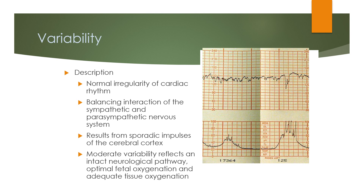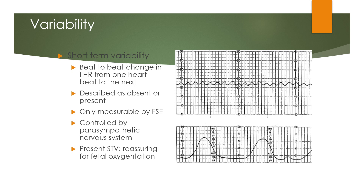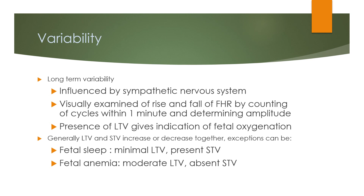Variability reflects the normal irregularity of cardiac rhythm, resulting from the balancing interaction of the sympathetic and parasympathetic nervous systems and sporadic impulses of the cerebral cortex. Moderate variability reflects intact neurological pathways and optimal fetal oxygenation. Short-term variability refers to beat-to-beat changes from one heartbeat to the next, described as absent or present, measurable only by FSE, and controlled by the parasympathetic nervous system. Long-term variability is influenced by the sympathetic nervous system and is determined by the rise and fall of fetal heart rate over cycles within one minute. Generally, LTV and STV increase or decrease together.